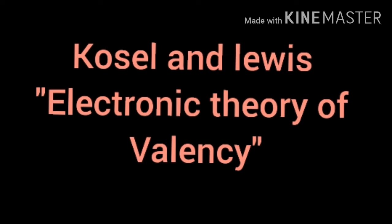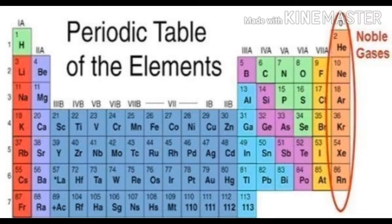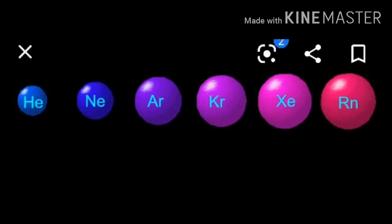It is otherwise called the Octet Rule — an important exam question. You all know about inert gases. Look at the 18th group in the periodic table, the last group, called inert gases or noble gases. The gases in the 18th group — helium, neon, argon, krypton, xenon, radon — do not combine with another atom or with atoms of themselves. They exist in a single manner, called a monoatomic molecule, because a single atom acts as a molecule.